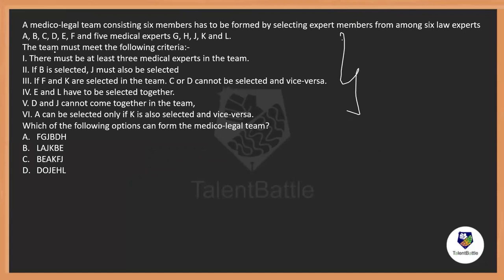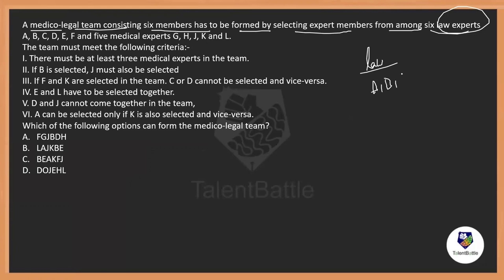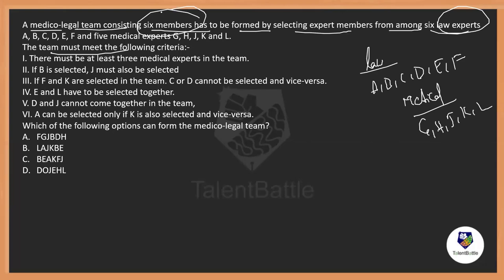Now a logical question — the data is more and it may take time to calculate. A medical-legal team consists of 6 members formed by selecting expert members from among 6 law experts: A, B, C, D, E, F — and 5 medical experts: G, H, J, K, L. A team of 6 members needs to be formed from these 11 people, and they have given us conditions.